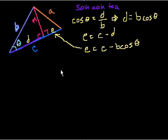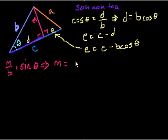So we know that M over B is equal to sine of theta. We know that M over B, because this is the hypotenuse, is equal to sine of theta, or that M is equal to B sine of theta. So we figured out M, we figured out E, and now we want to figure out A.